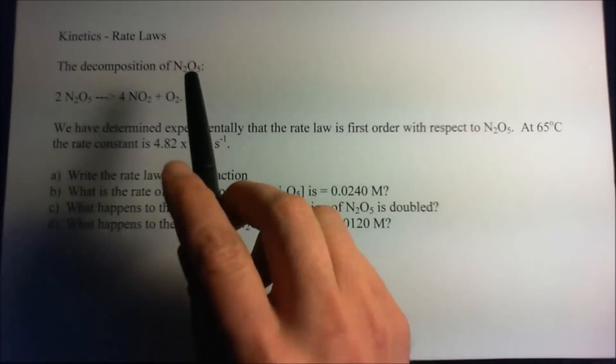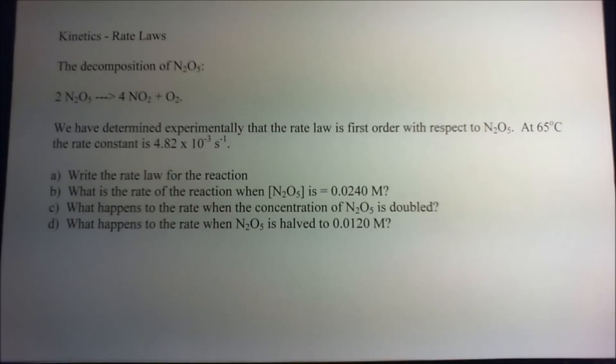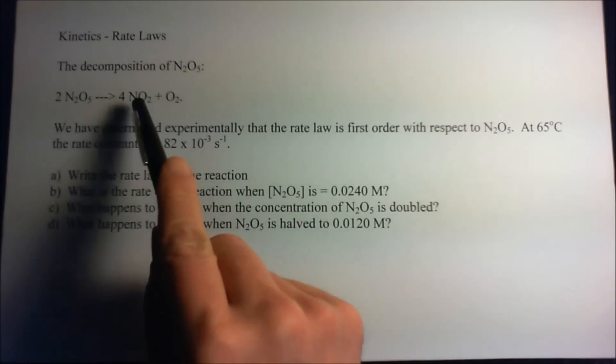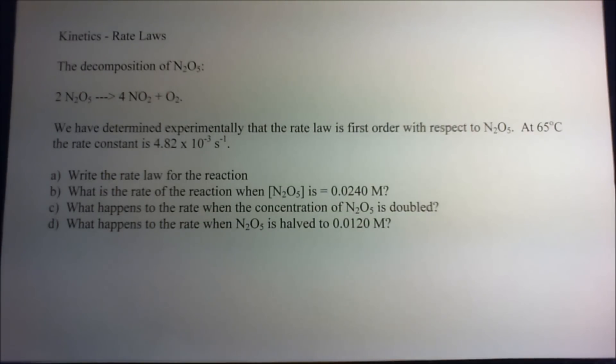So we have the decomposition of N2O5, dinitrogen pentoxide, and it decomposes into nitrogen dioxide plus oxygen. And we determined experimentally that the rate law is first order with respect to N2O5.